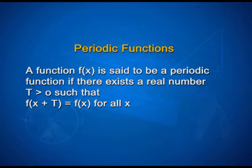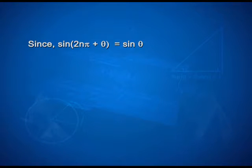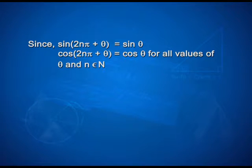Now let us study about periodic functions. A function f(x) is said to be a periodic function if there exists a real number t greater than 0 such that f(x + t) = f(x) for all x. Since sin(2nπ + θ) = sin θ and cos(2nπ + θ) = cos θ for all values of θ and n belonging to integers.